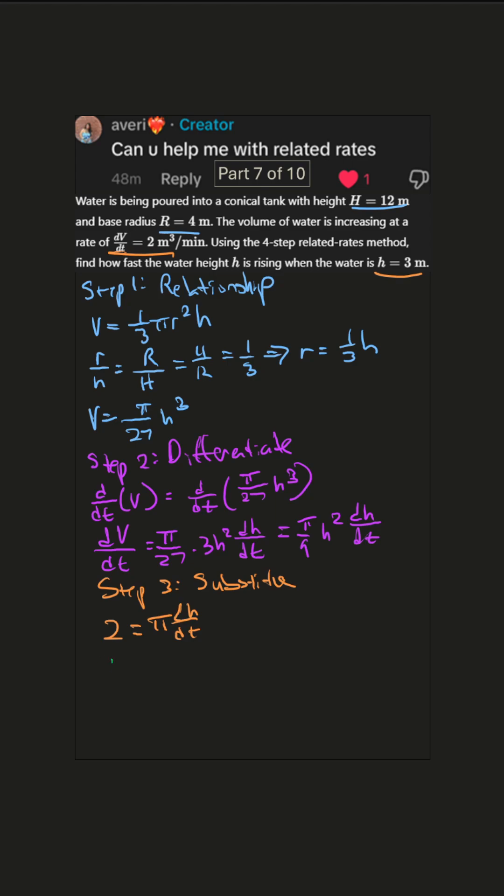Wow, we're getting there. Step 4, solve for any unknown. In this case, it's just the unknown rate. And that's very simple. We get dh/dt equals 2/π meters per minute.